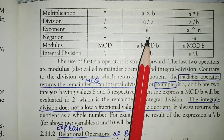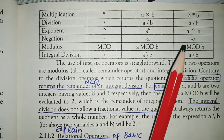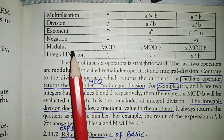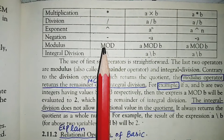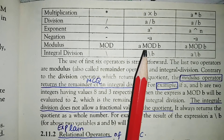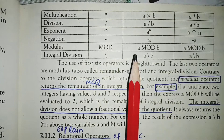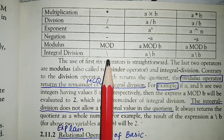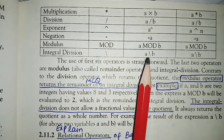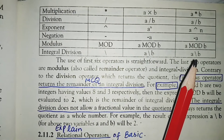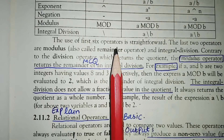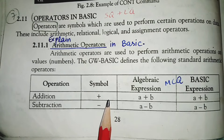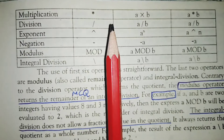Negation — the symbol is minus or dash. The algebraic expression and BASIC expression are the same: -A. Modulus operator — the symbol is MOD. The algebraic expression and BASIC expression are the same: A MOD B.